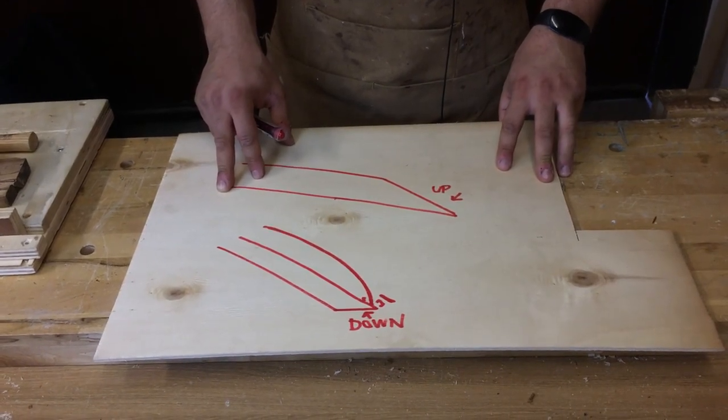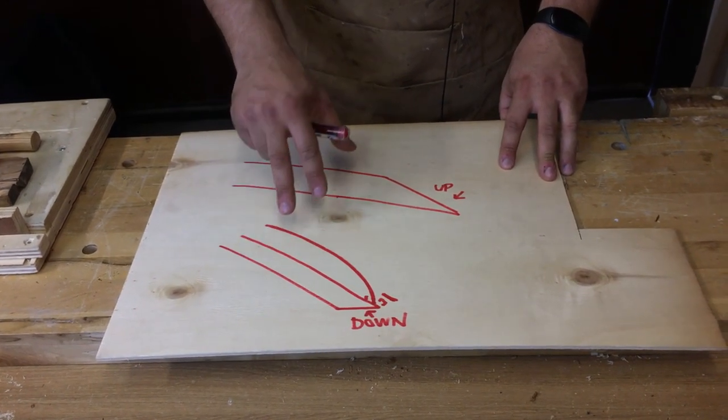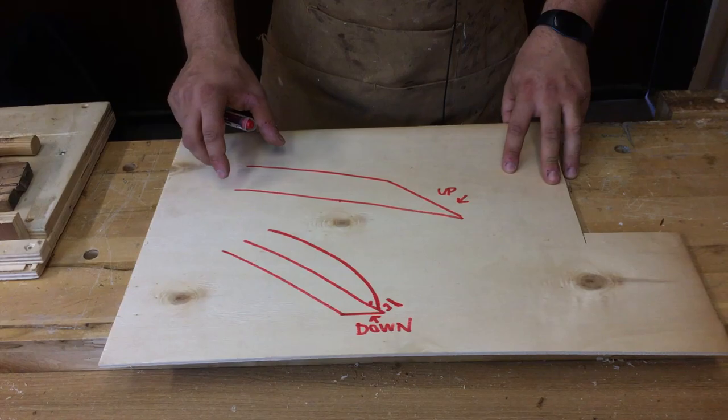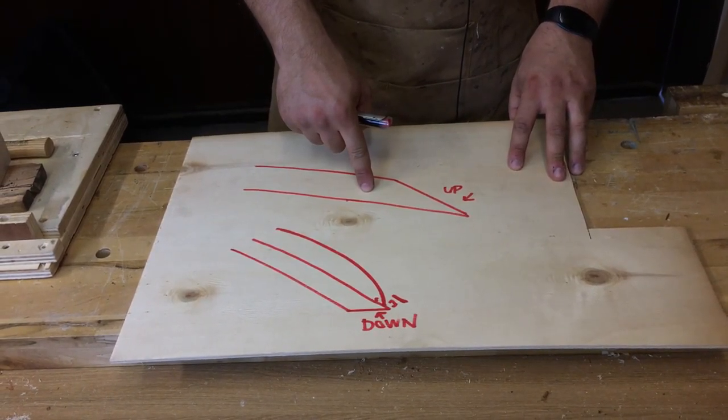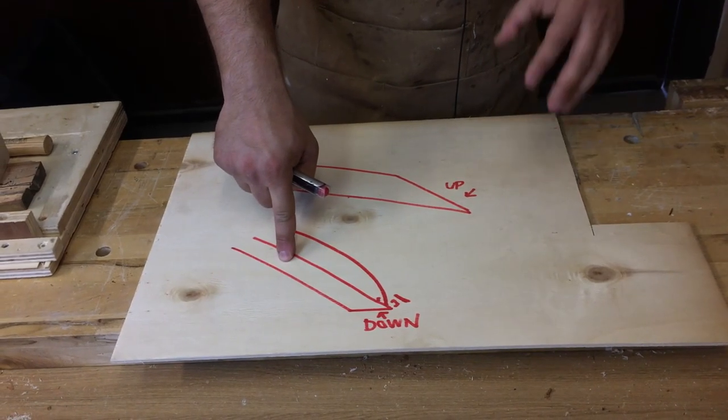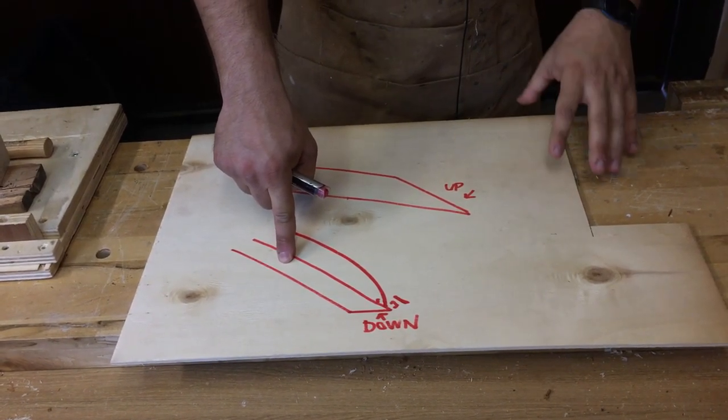Another important difference between a traditional plane and a low angle is the fact that the bed angle in a bevel up plane is 12 degrees, while the bed angle in a traditional one is 45 degrees.